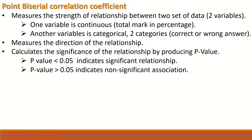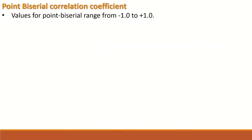A p-value greater than 0.05 indicates a non-significant association. The statistical test for the point biserial correlation coefficient generates values ranging from minus 1 to plus 1. Plus 1 indicates a perfect positive correlation, and minus 1 indicates a perfect negative correlation.